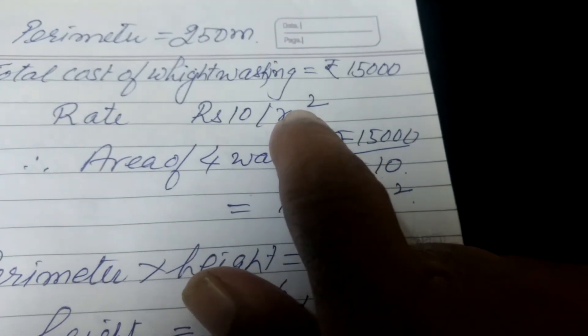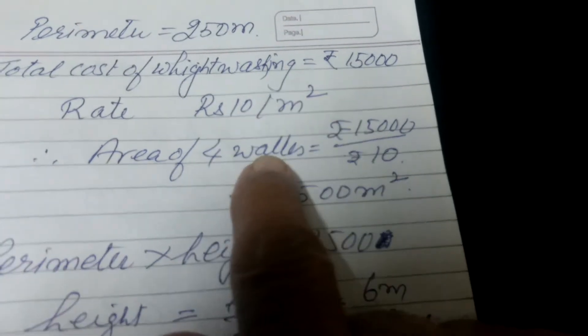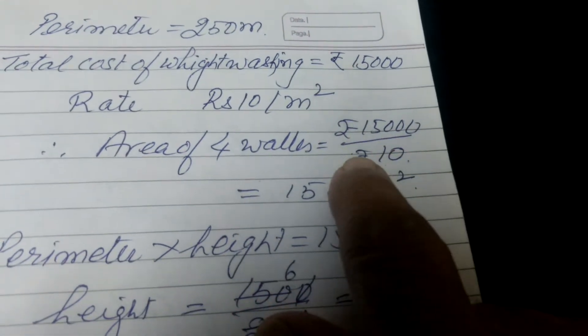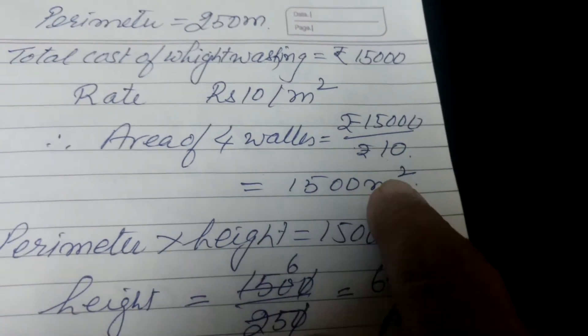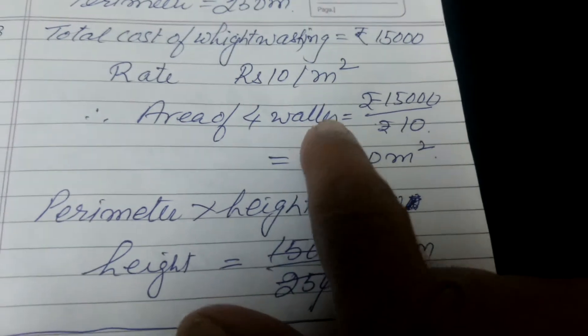Then the total area of 4 walls will come. So the area of 4 walls will be Rs. 15,000 over Rs. 10, which gives 1,500 meter square.